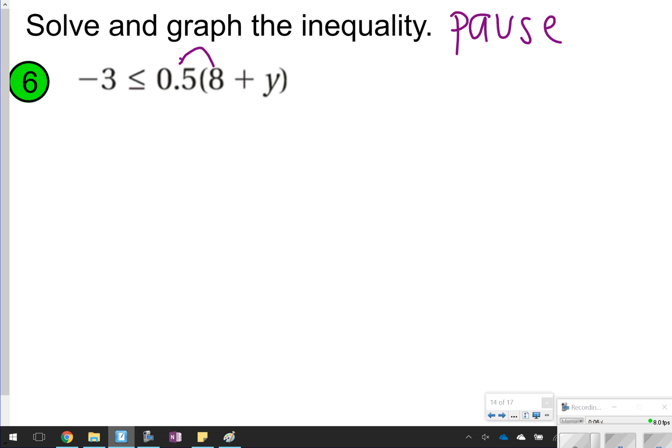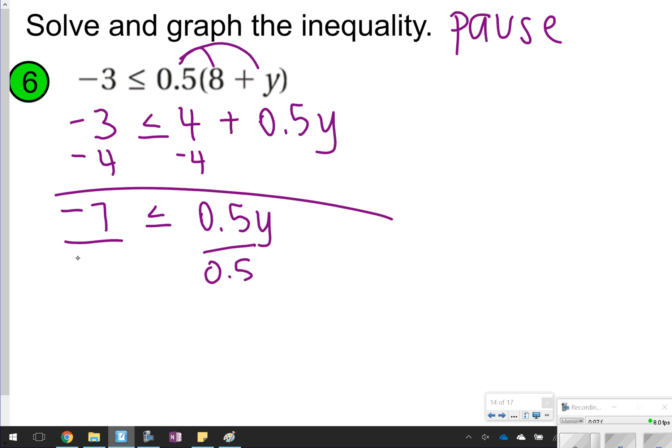All right, here we go. We're going to distribute first. So 0.5 times 8 is 4. 0.5 times y is 0.5y. Less than or equal to negative 3. I'm going to subtract 4 from both sides. So I get negative 7, less than or equal to 0.5y. I am going to divide both sides by 0.5. Dividing both sides by 0.5 is the same thing as multiplying by 2.